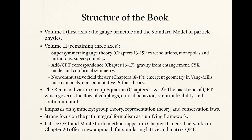The third axis, centered on ADS-CFT, is covered in chapters 16 and 17, where we explore the emergence of Einstein gravity from quantum entanglement and the rise of conformal symmetry in the SYK model, relevant to the ADS-CFT correspondence. The fourth axis, devoted to non-commutative field theory, appears in chapters 18 and 19, covering emergent geometry in matrix models and the renormalizability of non-commutative φ⁴ theory. A central theme throughout is the renormalization group equation, discussed in chapter 11 of this volume and extended in chapter 12 of the second, serving as the backbone of QFT and governing scale dependence, critical phenomena, and the flow of physical parameters.